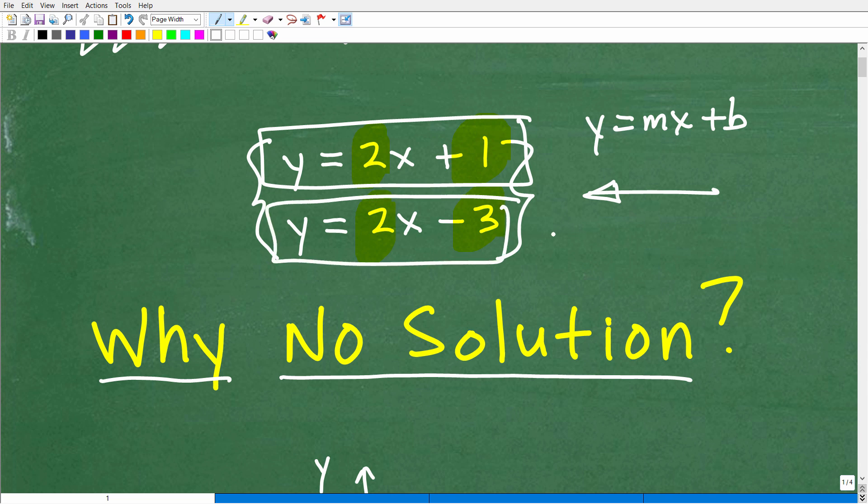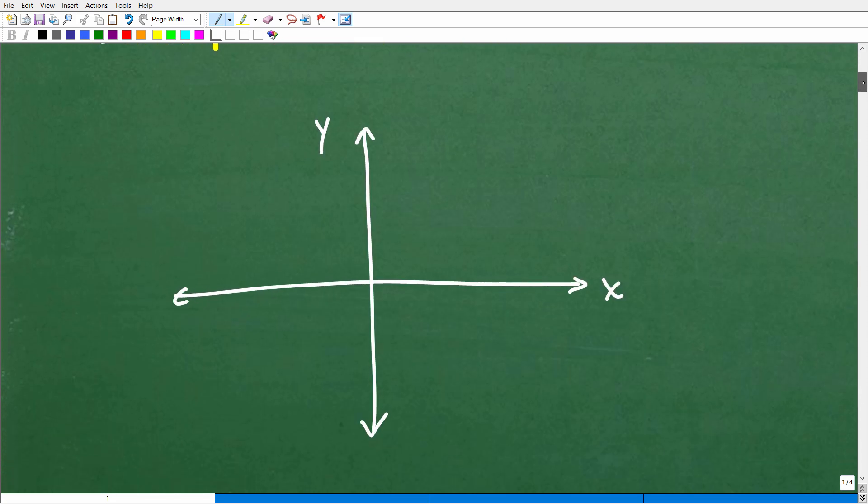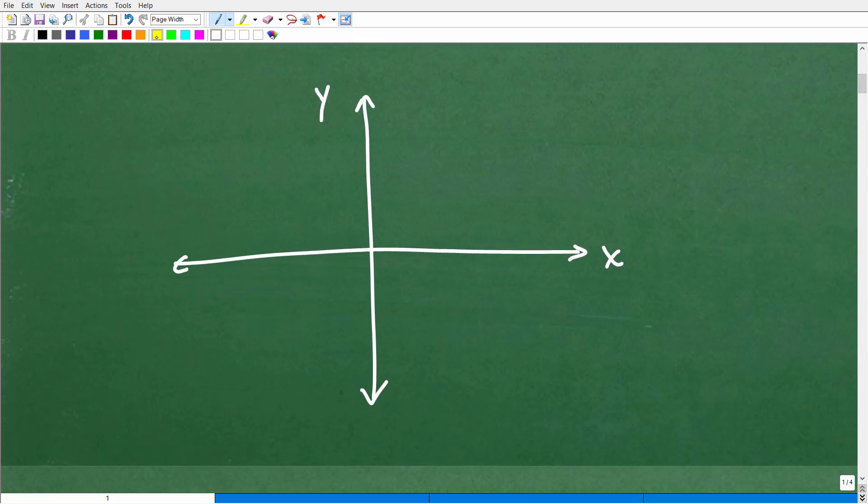So basically, a system, a two-variable linear system, the type of stuff that you learn in Algebra 1, are basically two lines. Now I have these linear equations written in this form, but they can come in all types of different flavors. But just think of them as two lines.